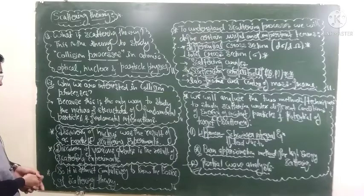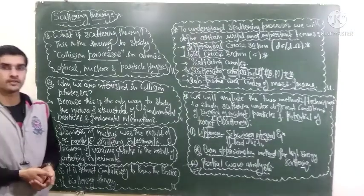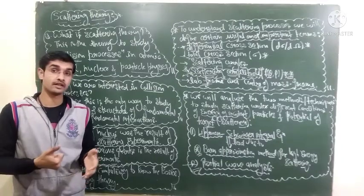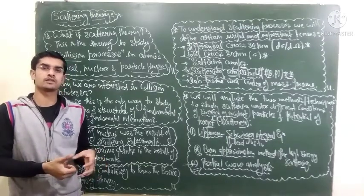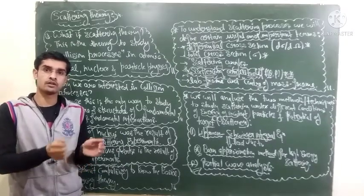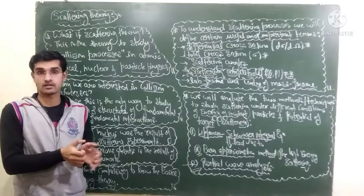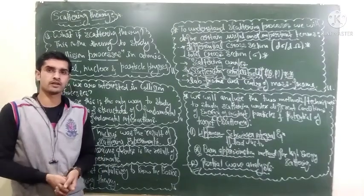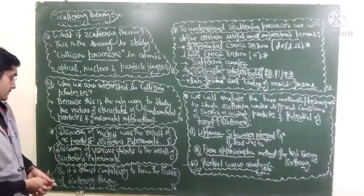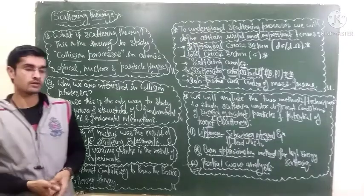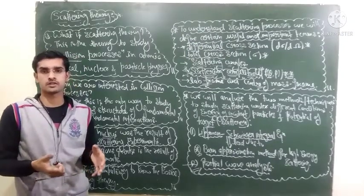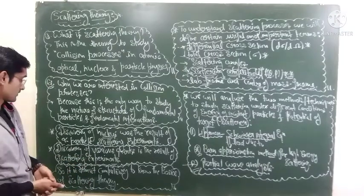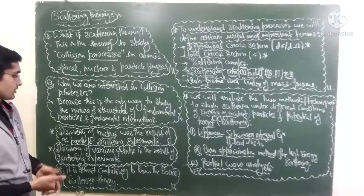To give some examples: the first is the discovery of the nucleus. You have all studied the alpha particle scattering experiment with the gold foil. From those experiments, Rutherford was able to conclude that there is a heavy particle at the center of the atom, giving us the nuclear or planetary model of the atom. Similarly, everything we know about quarks and other fundamental particles comes from scattering experiments — various quarks have been discovered through these experiments.